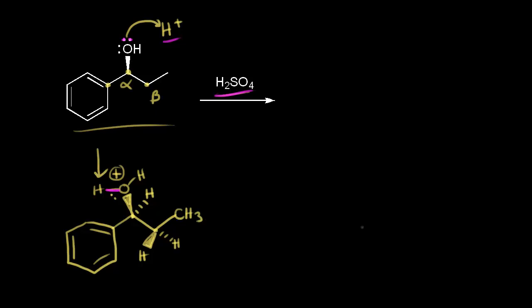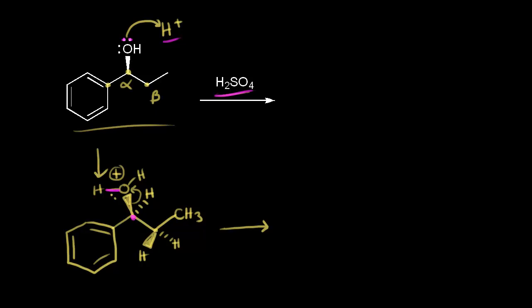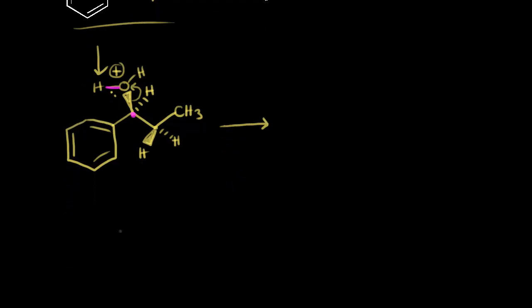The next step in our E1 mechanism is loss of our leaving group. Now we have water as a leaving group, and water is a good leaving group. These electrons can come off onto the oxygen and we lose water. We're taking a bond away from this carbon, so we're going to form a carbocation. After the water leaves, we get a plus one formal charge on this carbon. In an E1 mechanism, we need a stable carbocation, and this is a benzylic carbocation — so it's very stable.